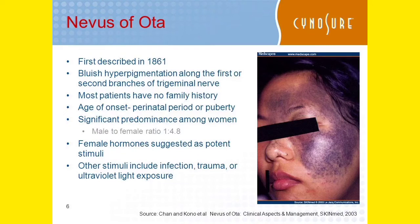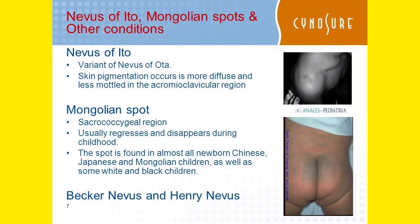Nevus of Ota was first described in 1861. It is a bluish hyperpigmentation that occurs along the first and second branches of the trigeminal nerve — the ophthalmic branch. There is a significant female predominance; women are more commonly affected.